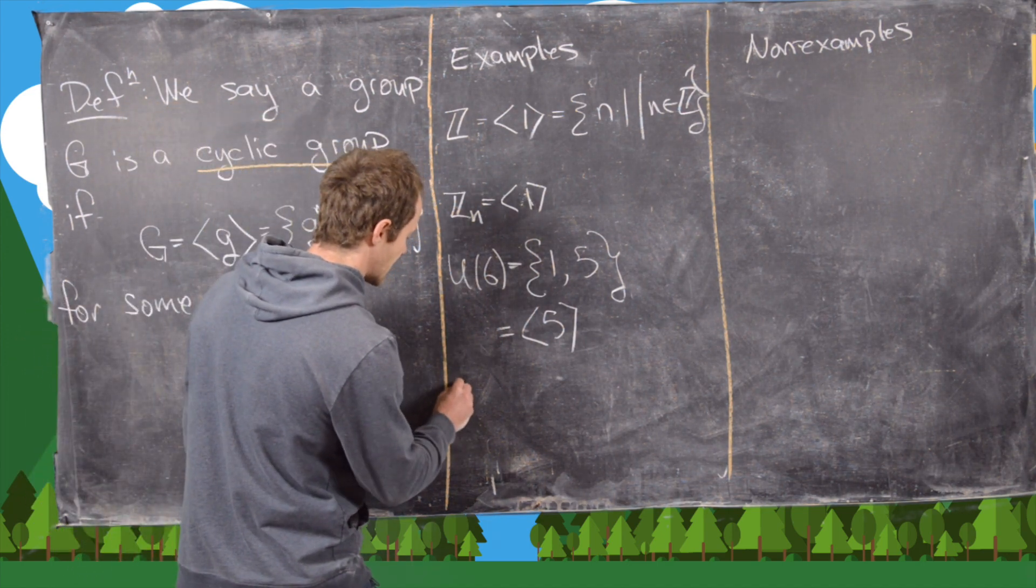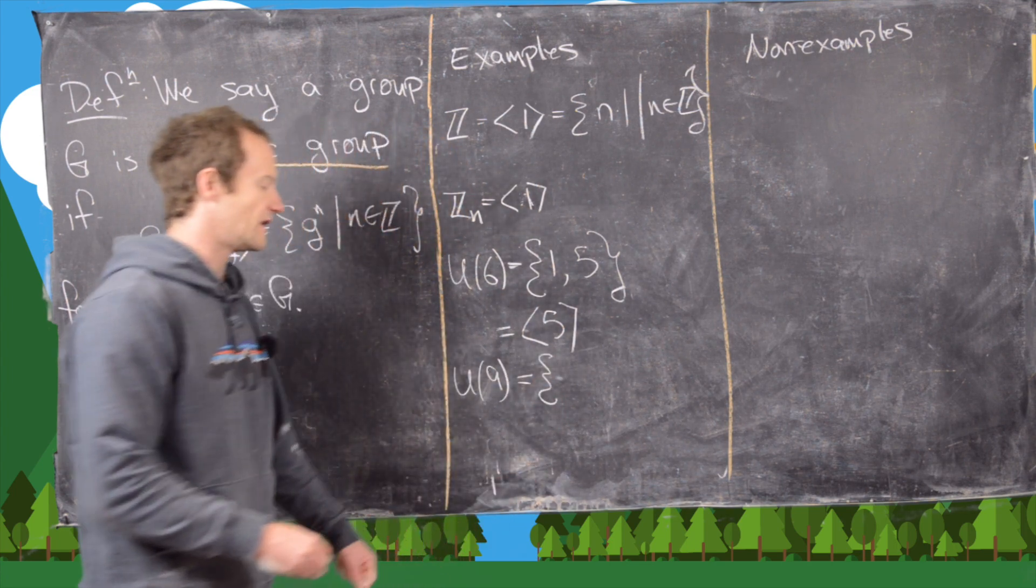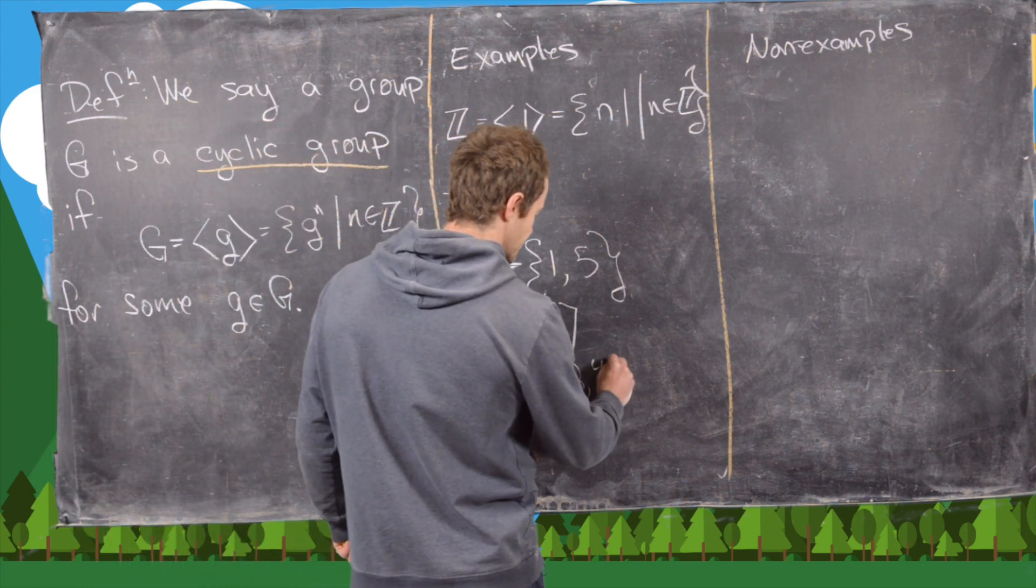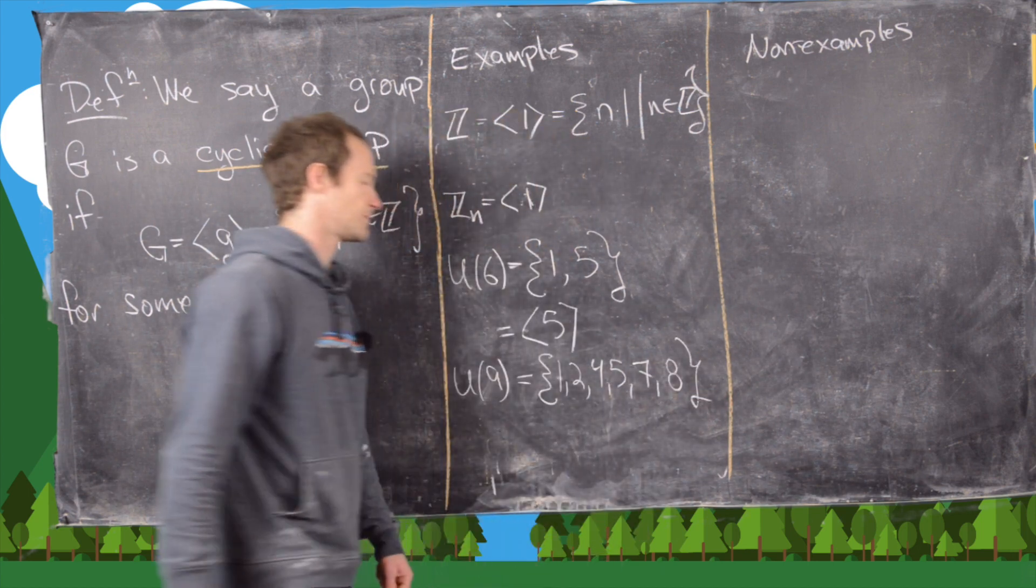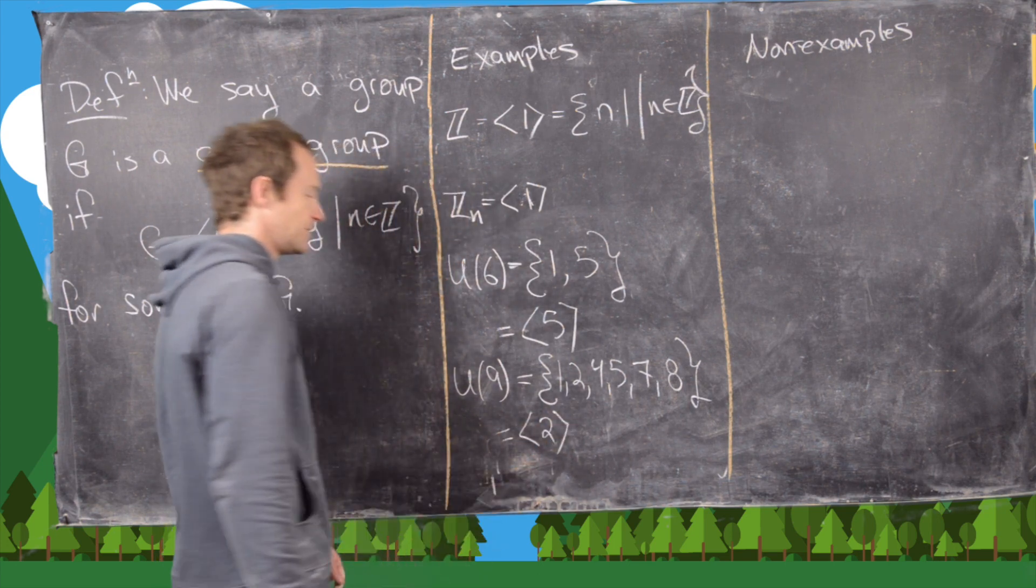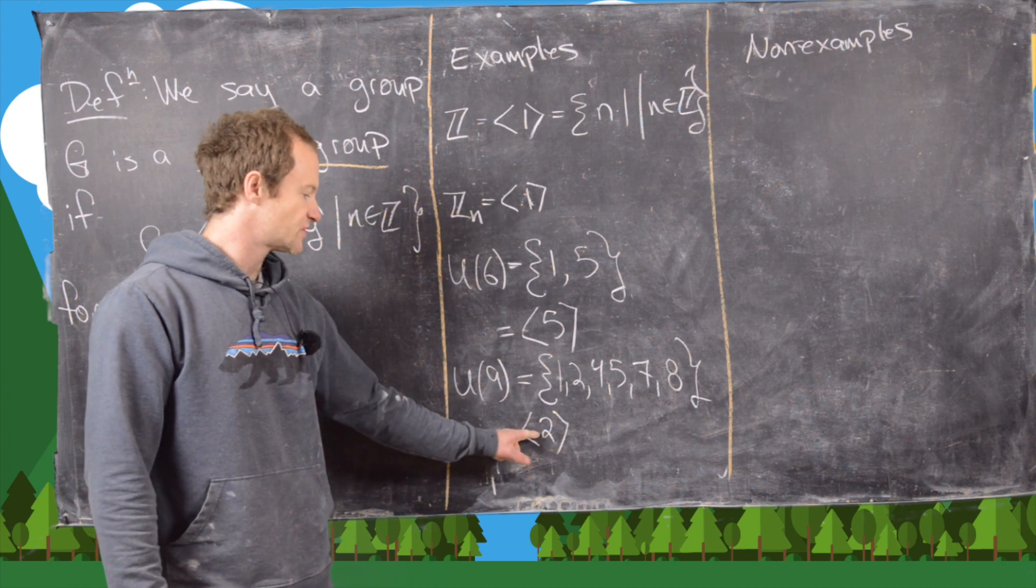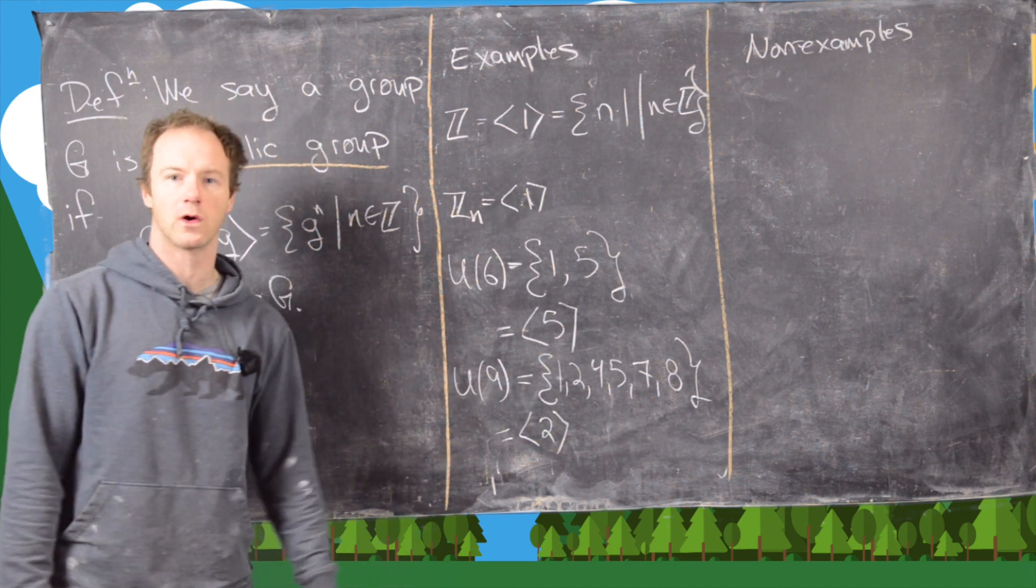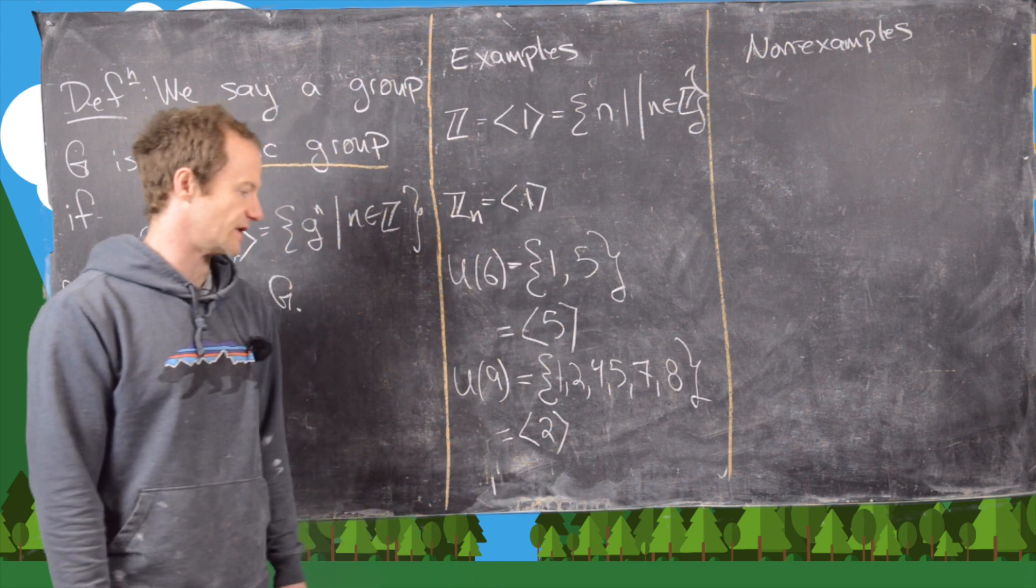Let's look at another example like this, maybe U(9). Notice that everything relatively prime to nine is given by one, two, four, five, seven, and eight. Now notice that this is generated by two. Let's check that real quick. Two to the zero is one, two to the one is two, two squared is four, two cubed is equal to eight.